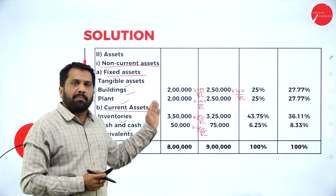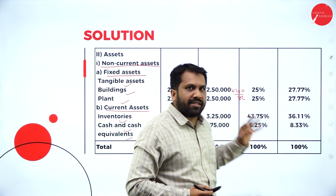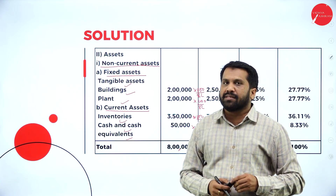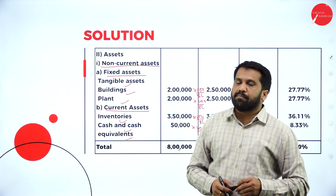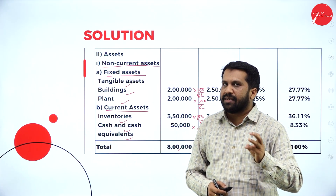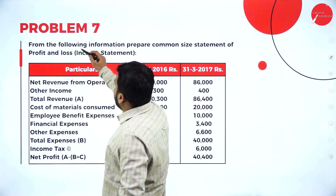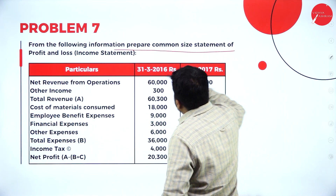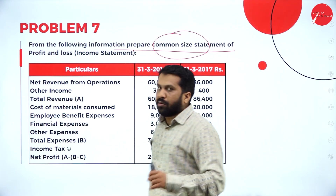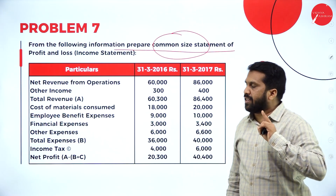Easiest one — comparative and common size. Never skip this topic because it is easy to score marks in comparative and common size. Trend percentage — they usually don't ask; always they go with common size and comparative. Now your next problem. From the following information, prepare a common size statement. They are not asking you to prepare a common size balance sheet — they are asking you to prepare a common size statement.